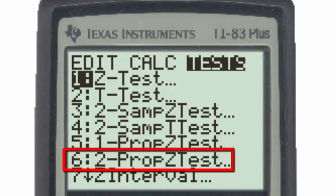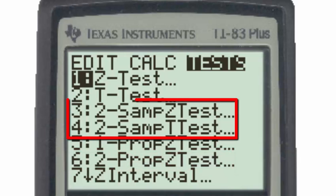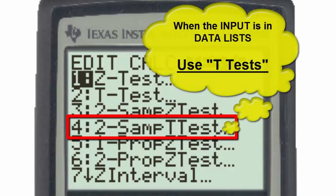Number six is a two proportion z-test which tests two proportions. Our claim concerns two means, which means we'll be using either number three or four. Since our sample data is presented in the form of lists, we will use a two-sample t-test, and we will adopt the convention that whenever our data is presented in lists we will use a t-test.